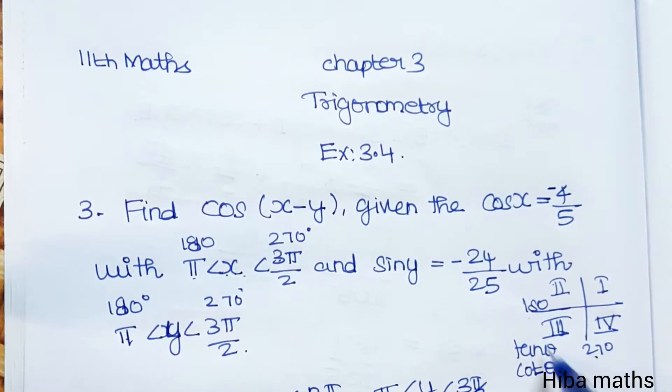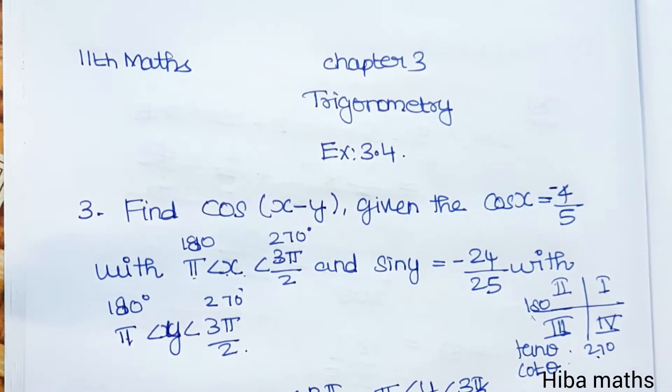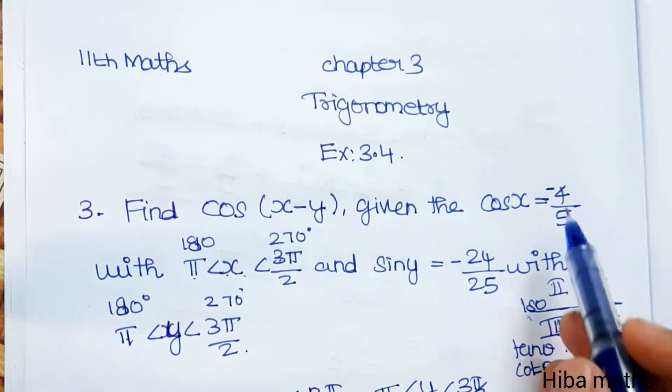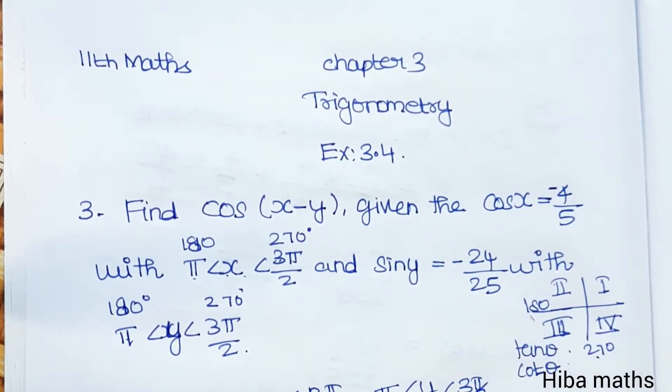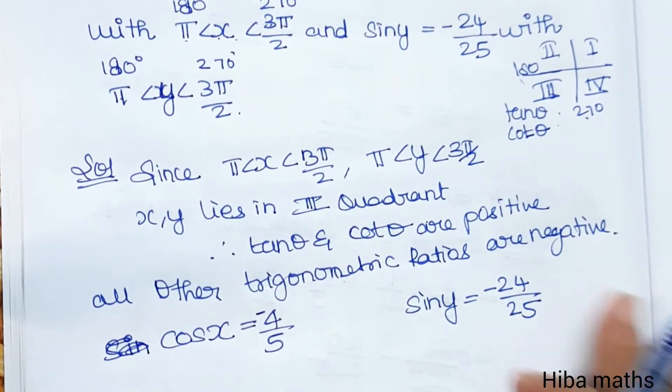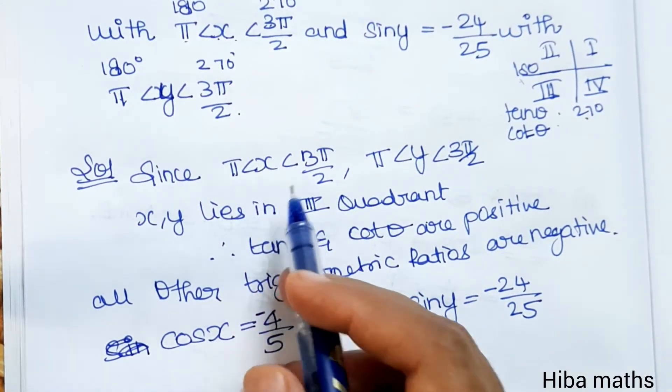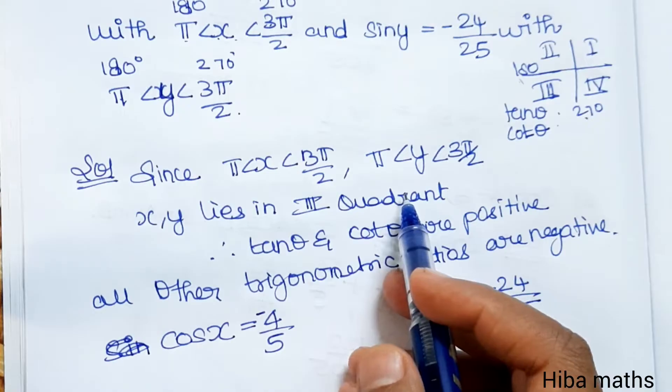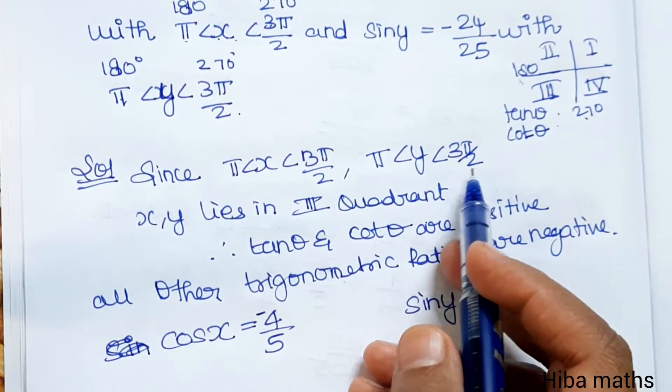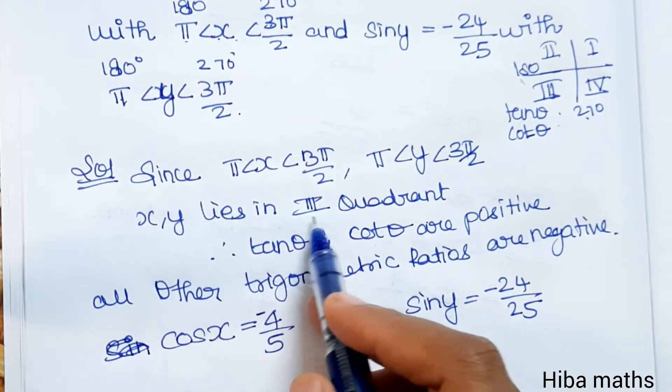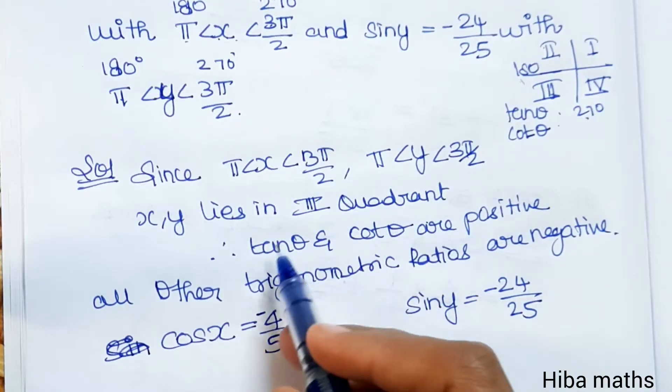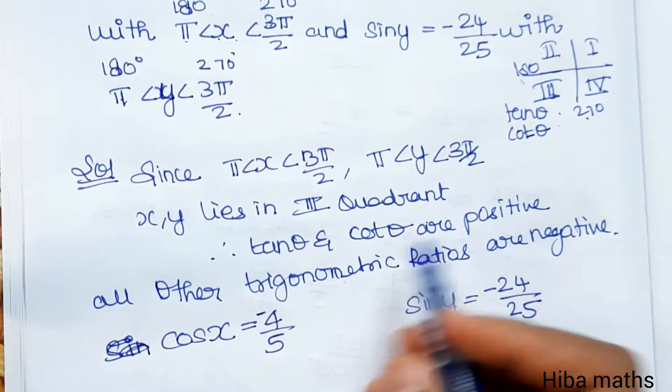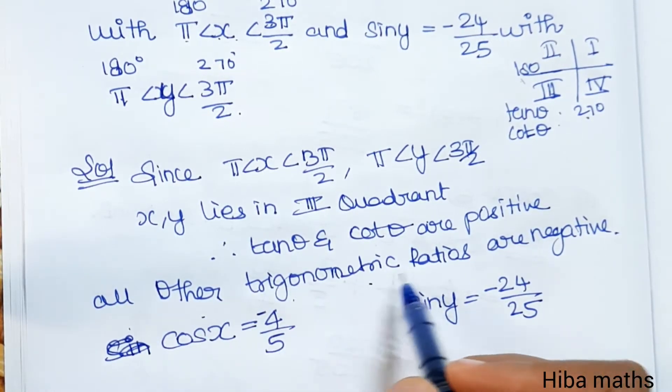Since x is greater than π, less than 3π by 2, and y is greater than π, less than 3π by 2, x and y both lie in the third quadrant. So tan theta and cot theta are positive, all other trigonometric ratios are negative.